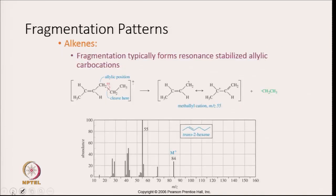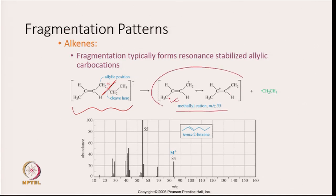This is the fragmentation pattern for alkenes. The fragmentation generally forms a resonance-stabilized allylic carbocation. The bond breakage will happen at the allylic position, giving you this cation. Since this is resonance stabilized, it will be formed in greater amount and will correspond to the base peak. The size of this species is 55, so you are seeing the most prominent peak at position 55, which is the base peak.